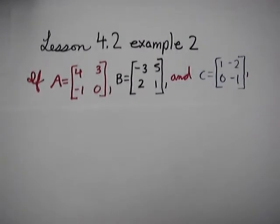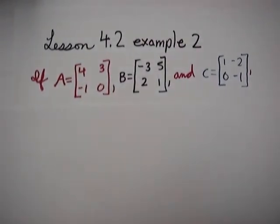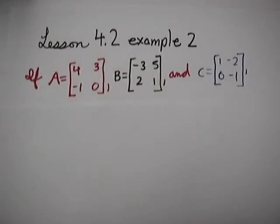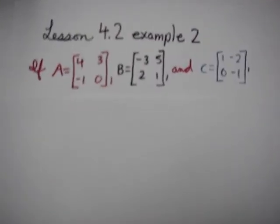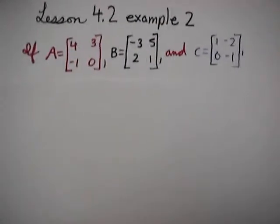In lesson 4.2, example 2, we multiply multiple matrices together. In this instance, we have matrix A, matrix B, and matrix C, and we will arrange them in different orders.